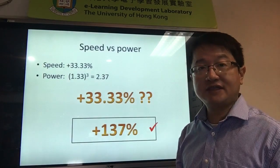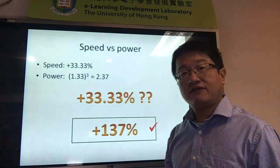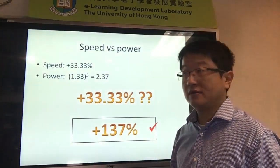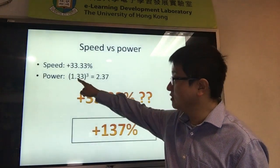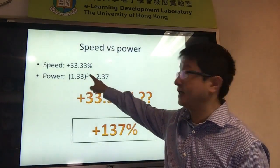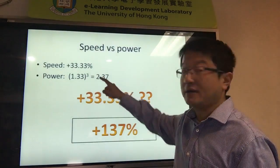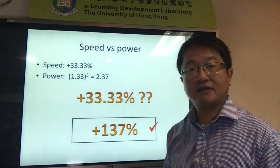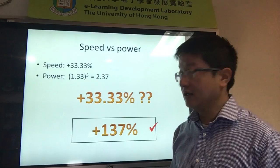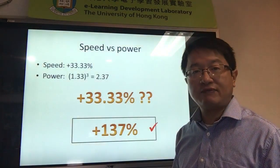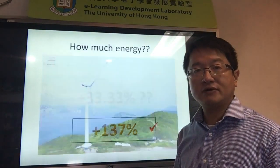So if the wind speed is 33% more, then the power should be 1.33 to the power of 3, which is about 2.37 times more, which is 137% more.